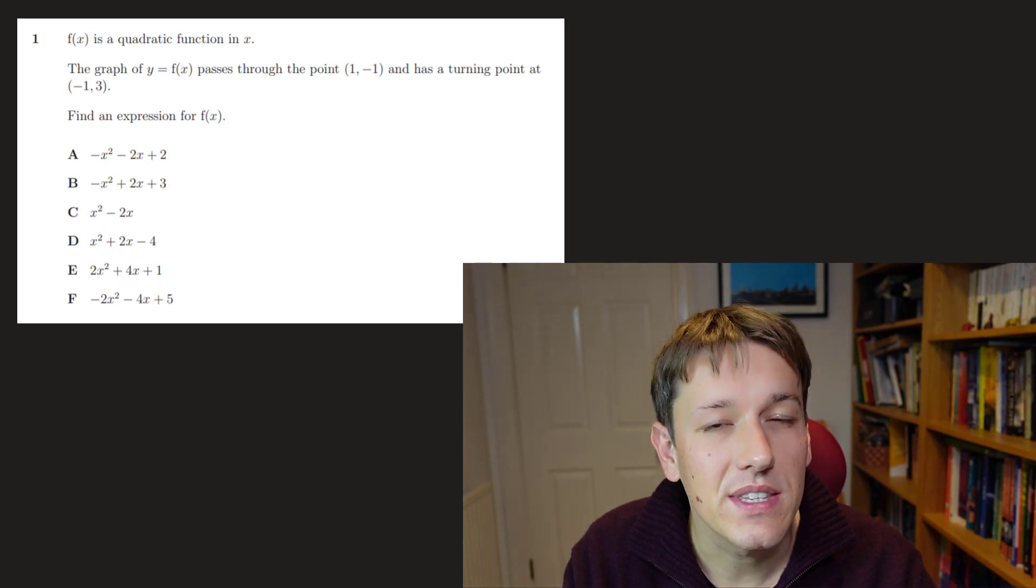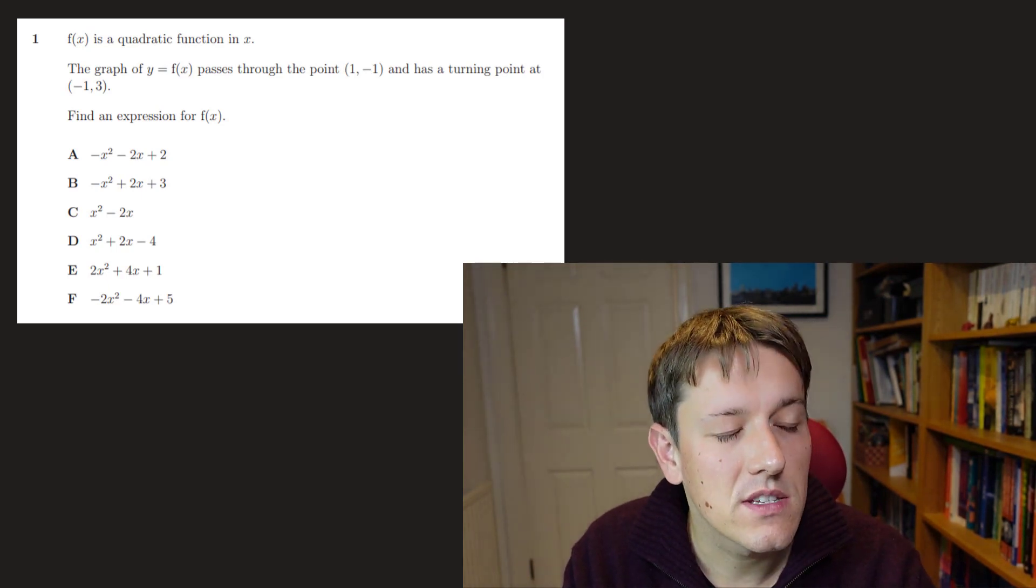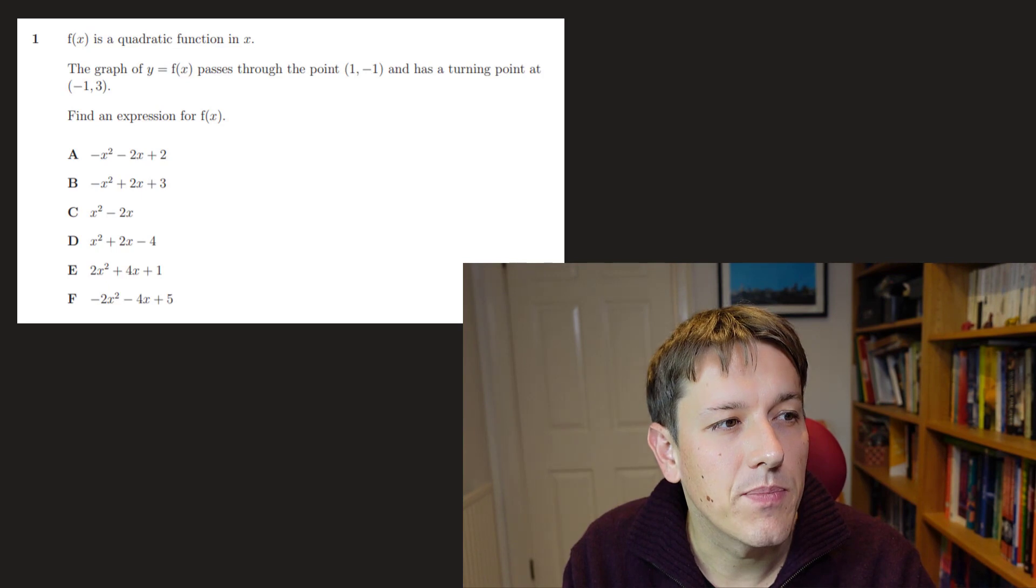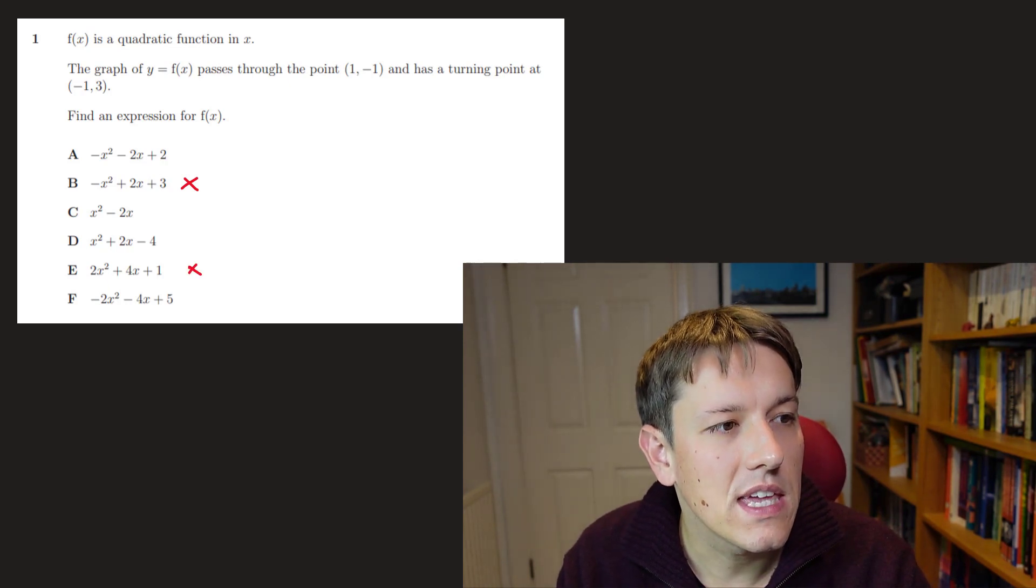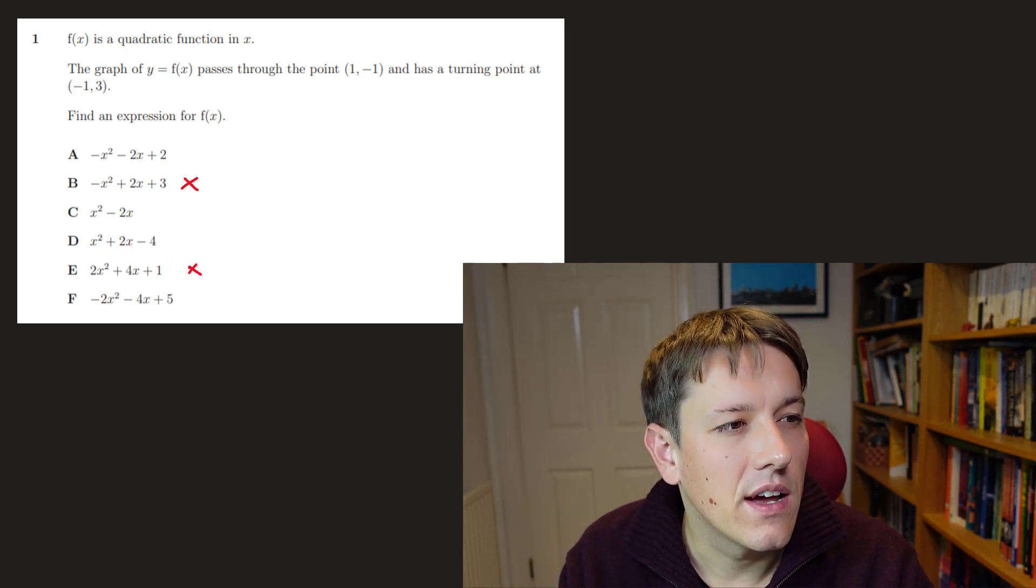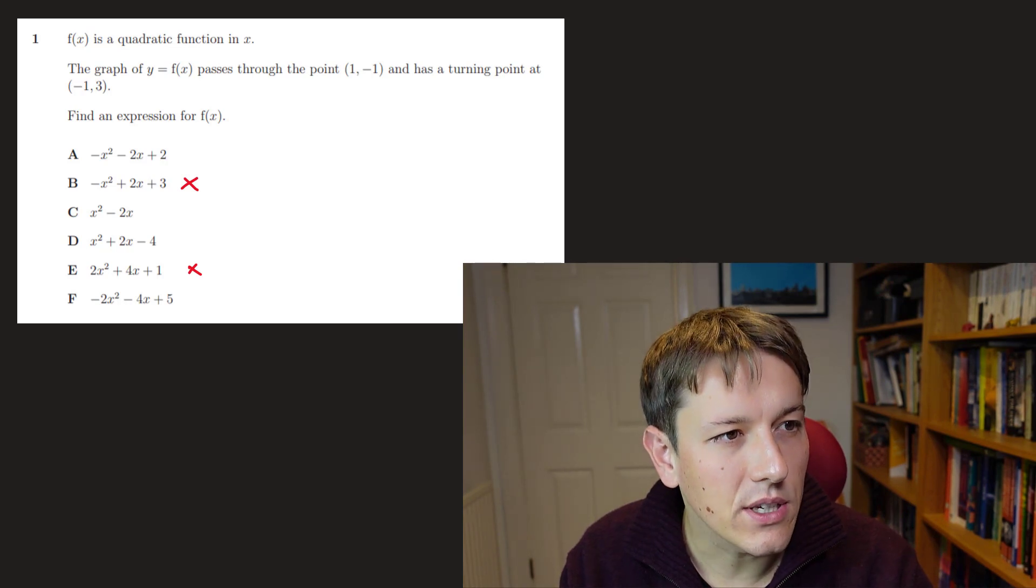So firstly, it passes through the point (1, -1). So I know when I substitute in x equals 1, I need to get -1 out. And we can scan down these and see which ones are true. So it is true for A, but for B I get -1 plus 5, that's not -1. C, I do get -1. D, I'm going to get -1. E, I'm going to get 5. So it's not E. And then F I do get -1 again. So I've eliminated two options here.